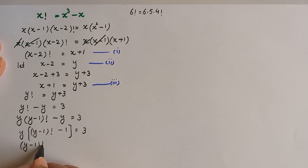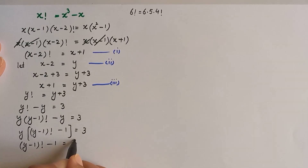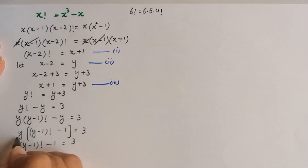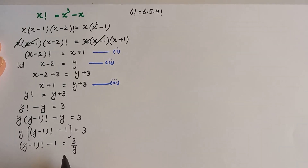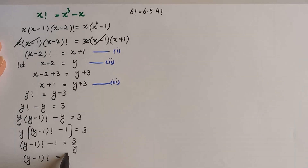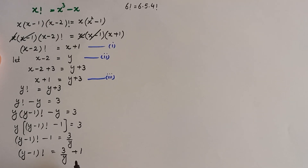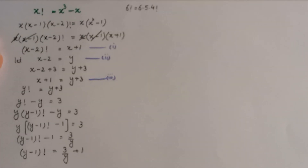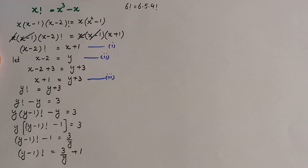Taking y to the right hand side by dividing, and moving the 1 to the right by adding, we get: (y minus 1) factorial equals 3 over y plus 1. At this step, watch carefully.